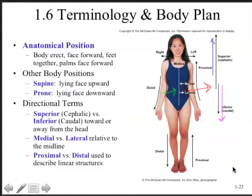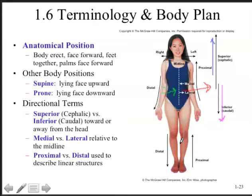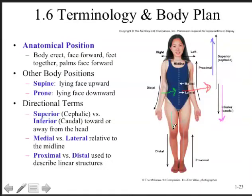Proximal versus distal is used to describe linear structures, essentially distance along a limb either towards or away from the trunk. The trunk is circled here in gray. As we move proximally, we're moving along a limb towards the trunk — shown with the gray arrow along the lower limb and upper limb. As we move distally — indicated in cyan — we're moving along the limb away from the trunk.